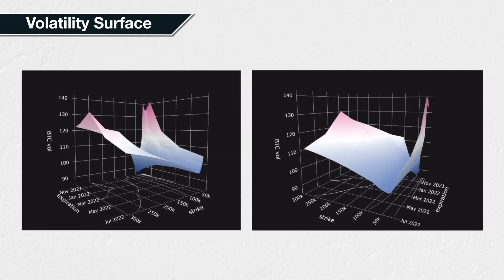This is an example of a volatility surface on Genesis Volatility. It's showing the current vol surface for Bitcoin options. The three axes are strike price, expiration date, and implied volatility.